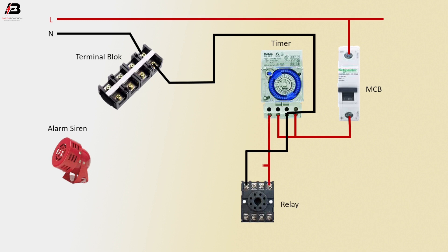Phase connection output from timer connects to relay at another two points. Phase connection outgoing from relay to alarm siren. Neutral connection from terminal block connects to alarm siren.